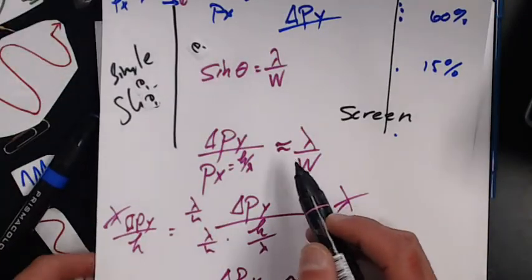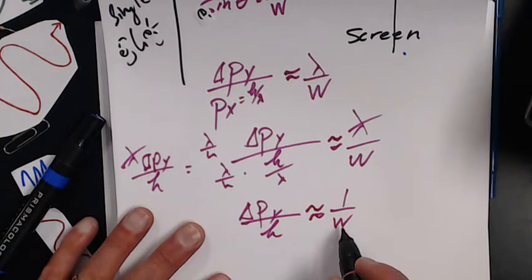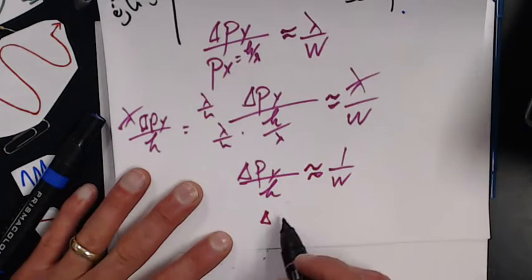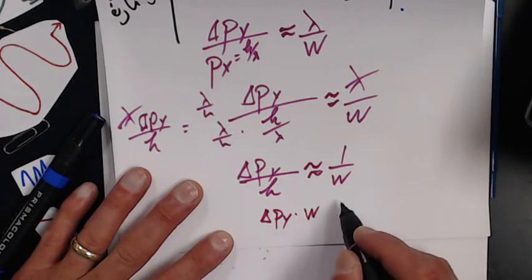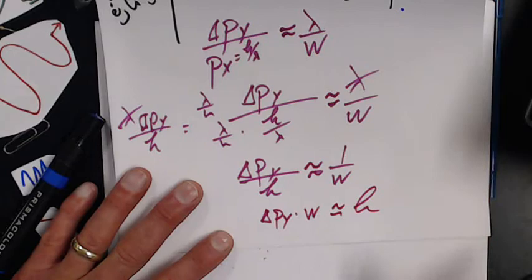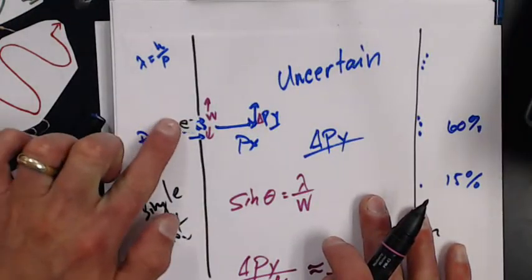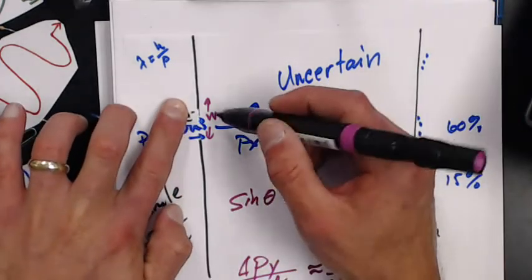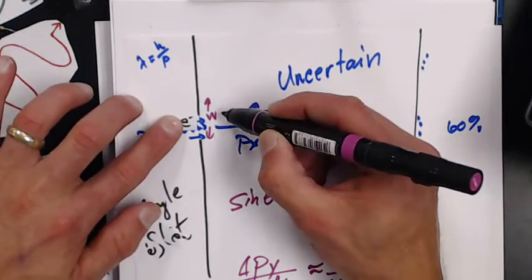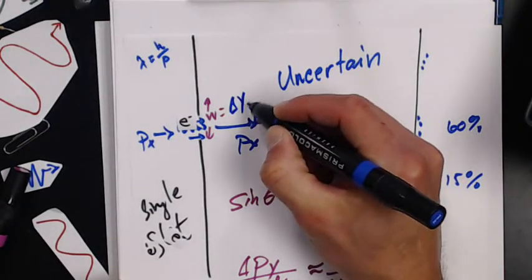The change in momentum in the y-direction times the slit width is related to h. But now my slit width, I don't know where it's coming through here, so my slit width is my uncertainty in the y-direction.